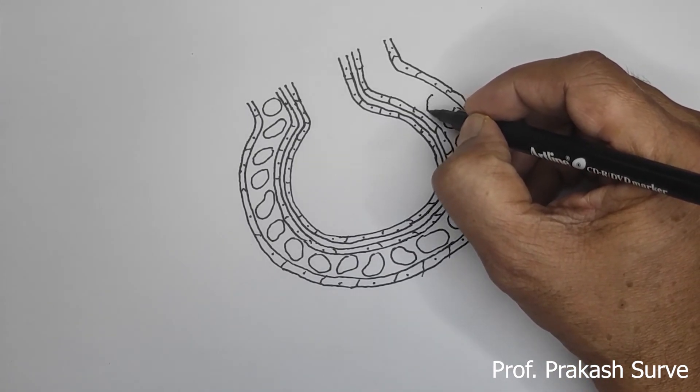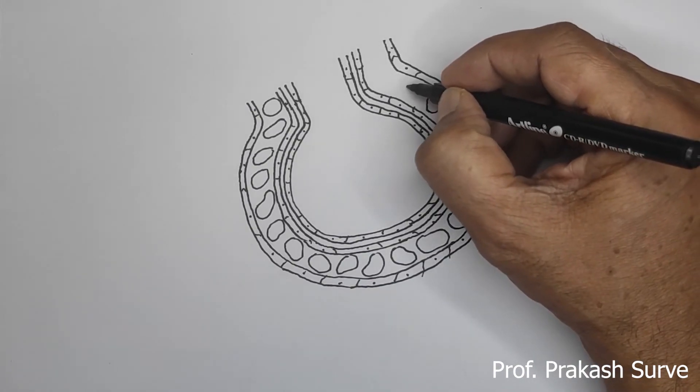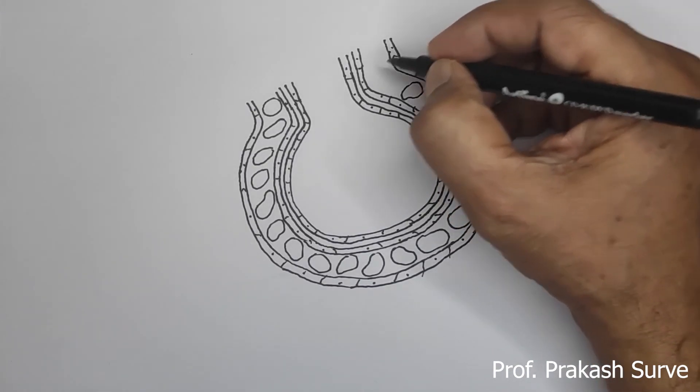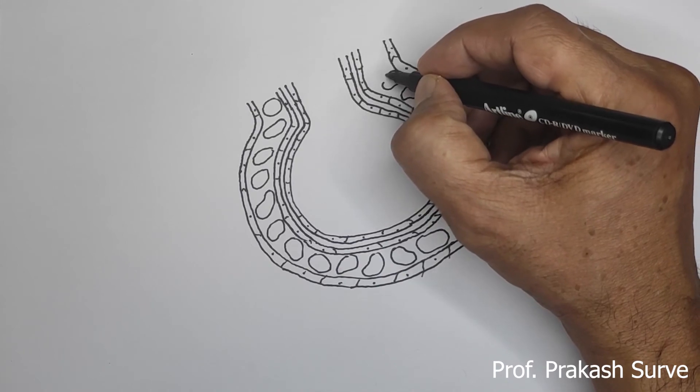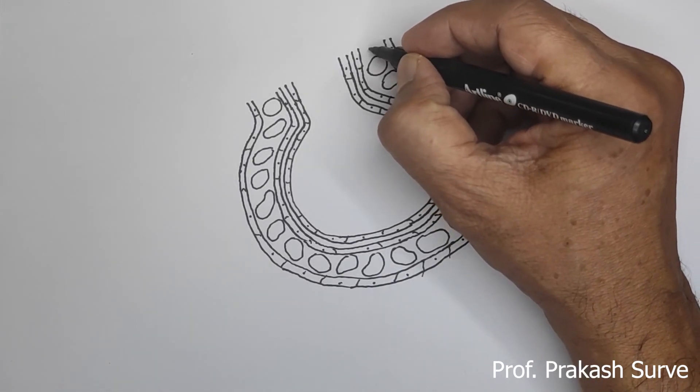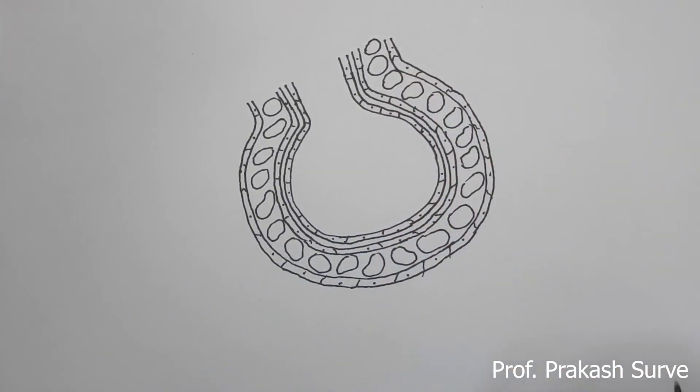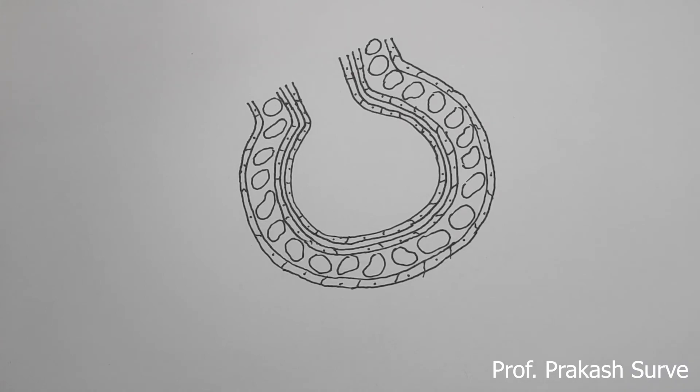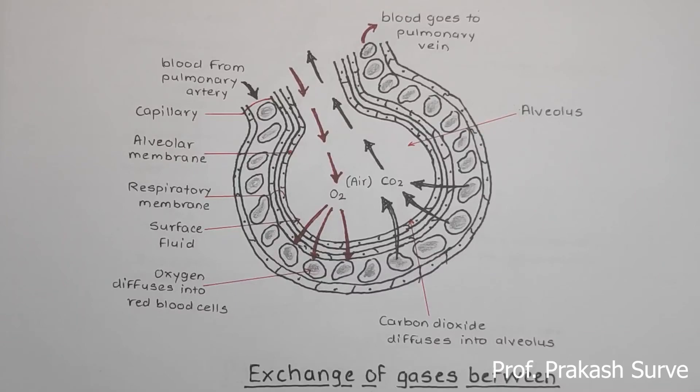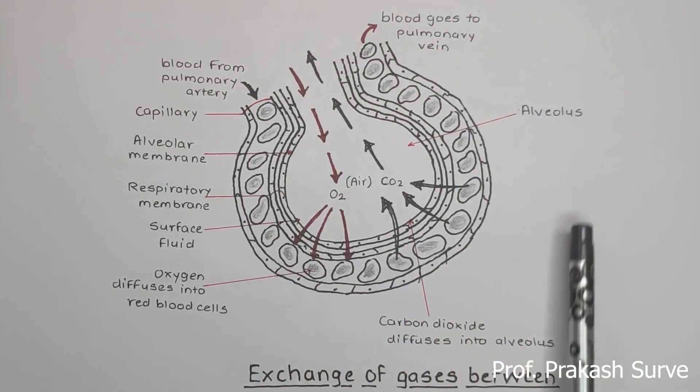The left side is where blood goes to the pulmonary vein. On the right side, blood comes from the pulmonary artery. Now we'll label the parts. This way we have to label all the parts including the pulmonary artery.